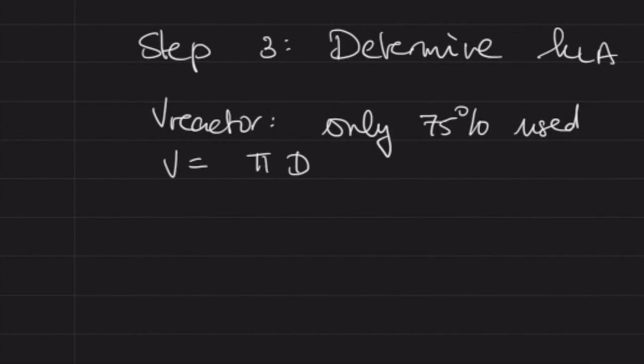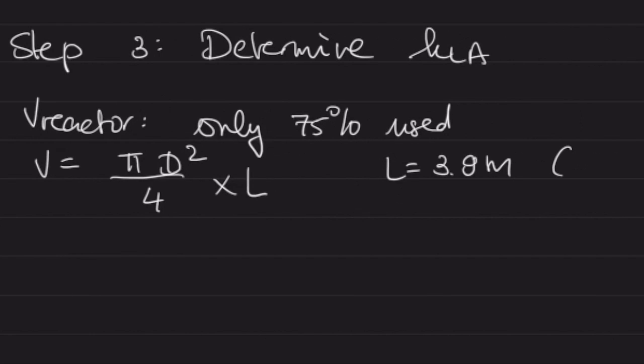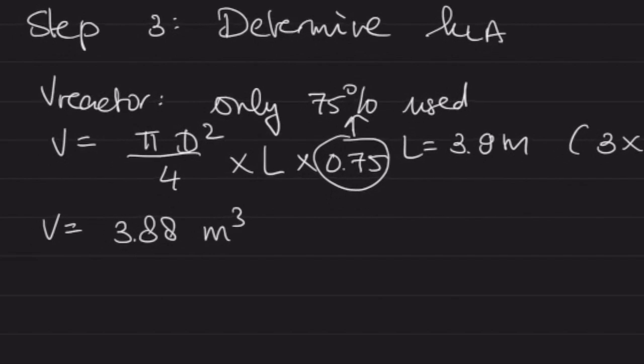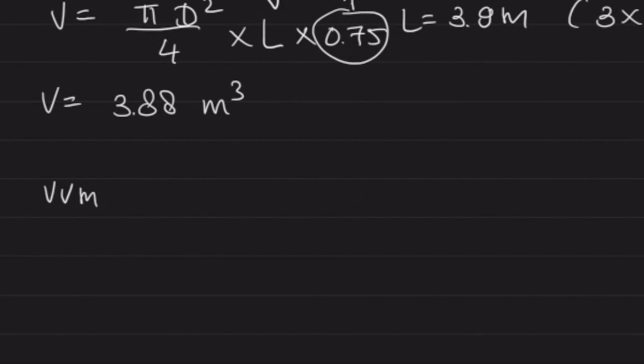We need to look at the volume of the reactor and determine the superficial gas velocity. First, the reactor volume: bear in mind it's never 100% full. In this case, it's 75% full. We're working with a common ratio where the length is three times the diameter. Make sure we account for the correction factor that the reactor isn't fully full—we're only looking at the liquid volume. The volume should come down to roughly 3.9 cubic meters.